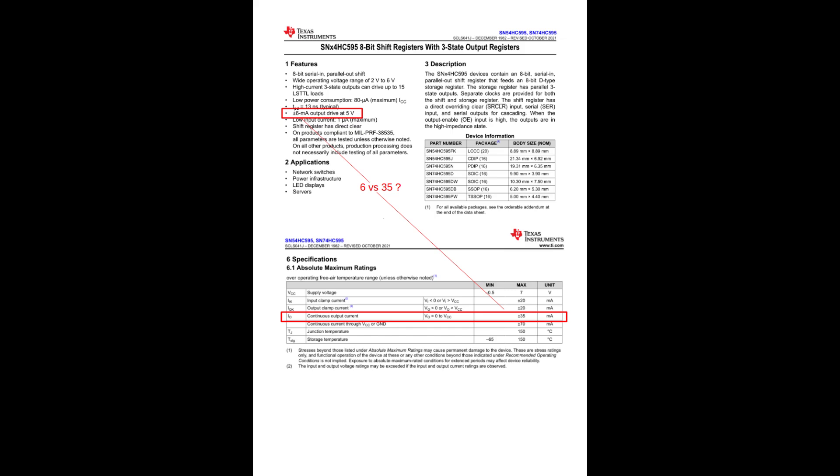The datasheet of the level shifter used here to drive those lines is sending me a bit mixed signals regarding this. Is the 6 mA maybe per output and the 35 mA the combined total for all outputs? Because in that case the 6 mA might be a problem for Mario's fix.